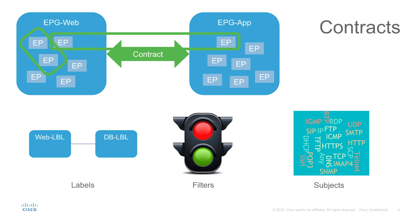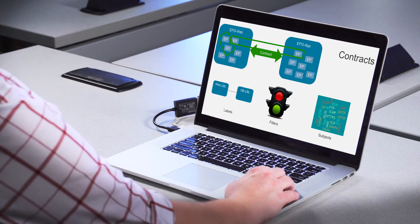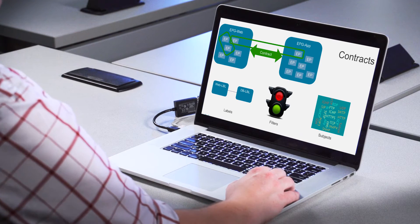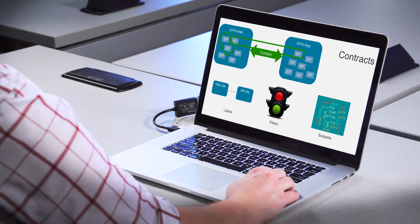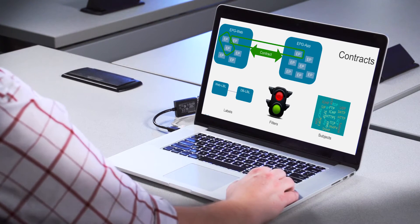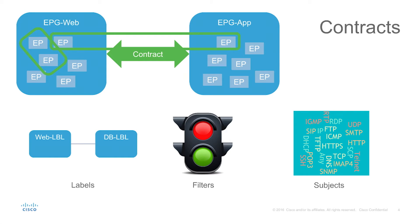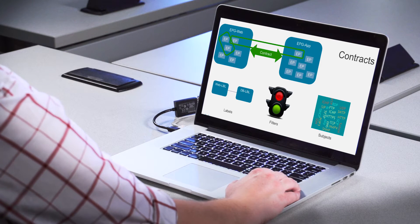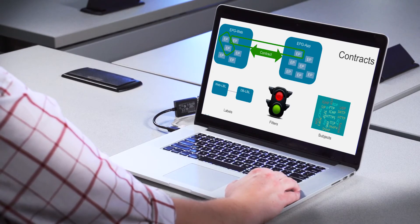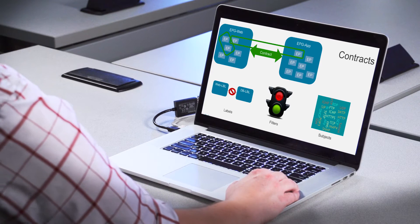Contracts are also made of three things: subjects, filters, and labels. The names of these constructs aren't as important as understanding ultimately what a contract does. It's very similar to an ACL or firewall rule, except that you're generally allowing traffic instead of denying it — remember that whitelist model. The label is the first thing checked and it's an optional feature. Basically, the label is a name or tag applied to an object such as an EPG, and if the names don't match up between two EPGs, traffic will be denied.